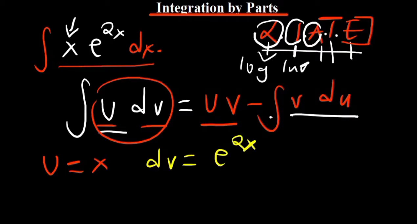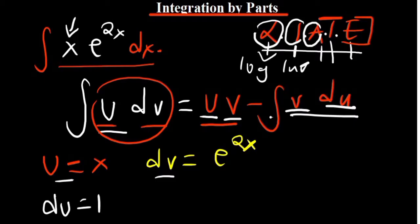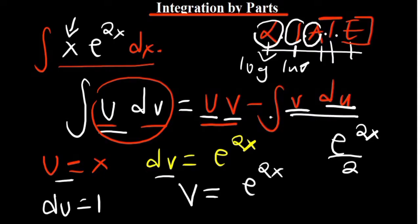So our u is x, and our dv is e to the power 2x. We need u, v, du, and dv. We have u and dv, but we still need v and du. If you differentiate x, you get du = 1. To get v, we integrate dv: when integrating an exponential function, divide by the derivative of the power. The derivative of 2x is 2, so v = e to the power 2x over 2. Check our video on derivatives of exponential functions for more.